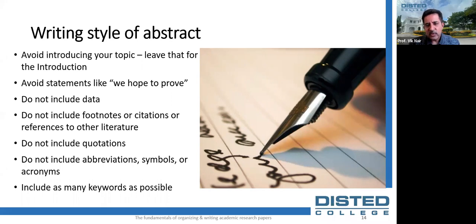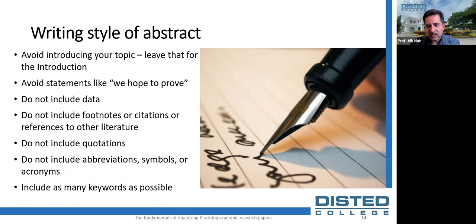Be careful what data you present — the full data is for the results section. Do not refer to other literature within the abstract, since it is a standalone part of the document. Say something like 'current research shows' or 'studies have indicated' but don't refer to a particular study, because then you'd have to cite it. You cannot include quotations needing footnotes or citations. Also try to avoid abbreviations, symbols, or acronyms as these may cause problems when the paper is indexed.